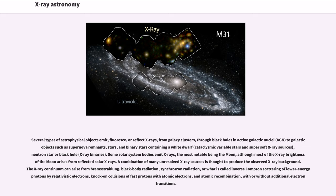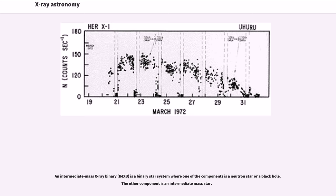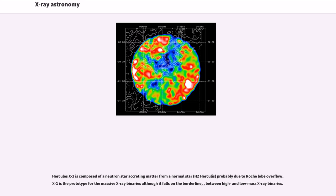An intermediate mass X-ray binary is a binary star system where one of the components is a neutron star or a black hole. Hercules X-1 is composed of a neutron star accreting matter from a normal star probably due to Roche lobe overflow. X-1 is the prototype for the massive X-ray binaries although it falls on the borderline between high and low mass X-ray binaries.